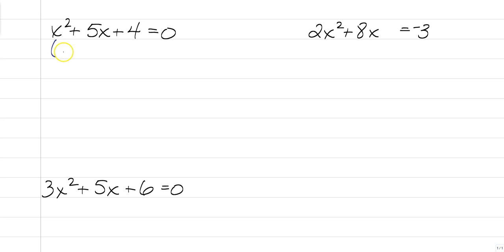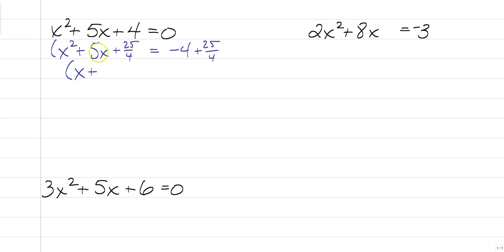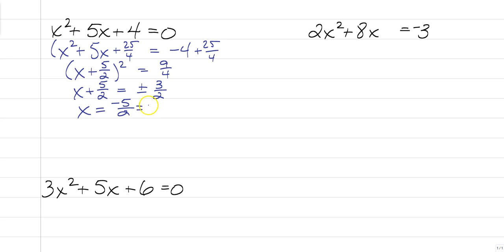So for this one, we have x squared plus 5x equals negative 4. Half of 5 is 5 halves, squared is 25 fourths. Remember, you must be able to work with fractions — if you can't, make sure you have your graphing calculator with you at all times. You have to add 25 fourths to both sides. To write this as the square of a binomial, we have x plus 5 halves, squared, equals — that's a negative 16 fourths, so this would equal 9 fourths. Square root both sides, and you get x plus 5 halves equals plus or minus 3 halves. Subtract 5 halves from both sides, and x equals negative 5 halves plus or minus 3 halves.